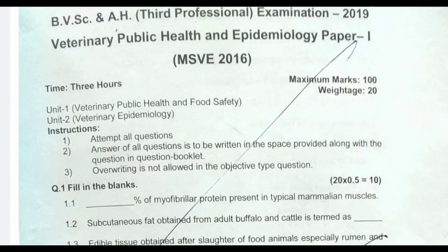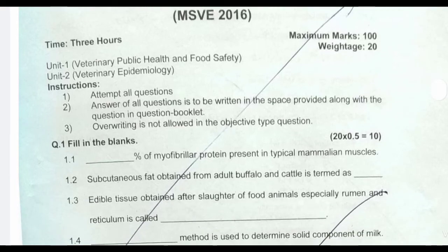Let's start with the fill-ups. The first question: dash percentage of myofibrillar protein present in typical mammalian muscles. The answer is 11.5 percent. Next question: subcutaneous fat obtained from adult buffalo and cattle is termed as — the answer is marbling.